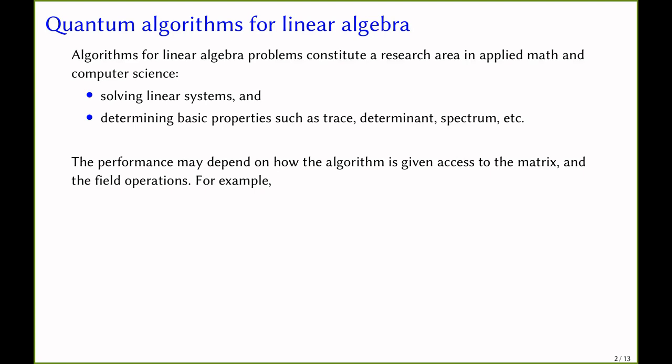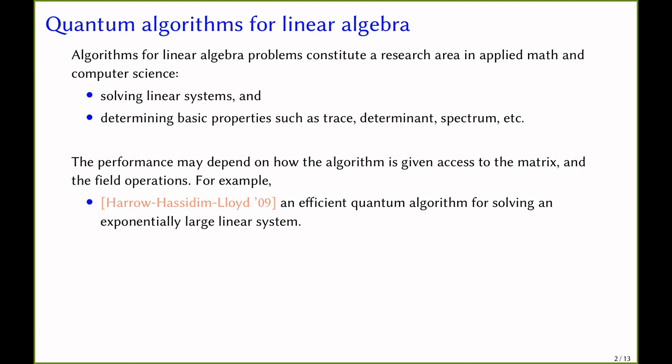For example, about 12 years ago, Harrow, Hassidim, and Lloyd gave the first efficient quantum algorithm for solving an exponentially large linear system, provided a quantum state that encodes the instance can be efficiently prepared. In particular, the input is a quantum state that encodes the vector b, and the algorithm outputs another quantum state that encodes the solution x to the equation Ax equals b.